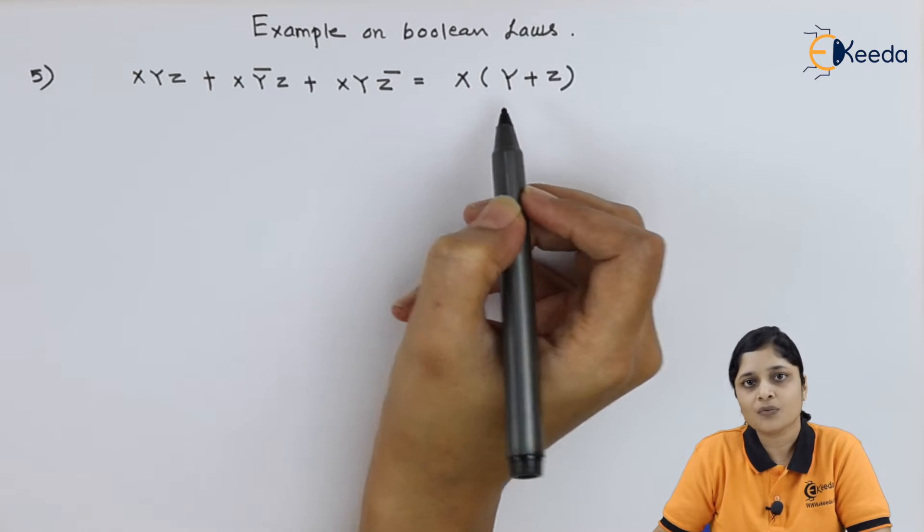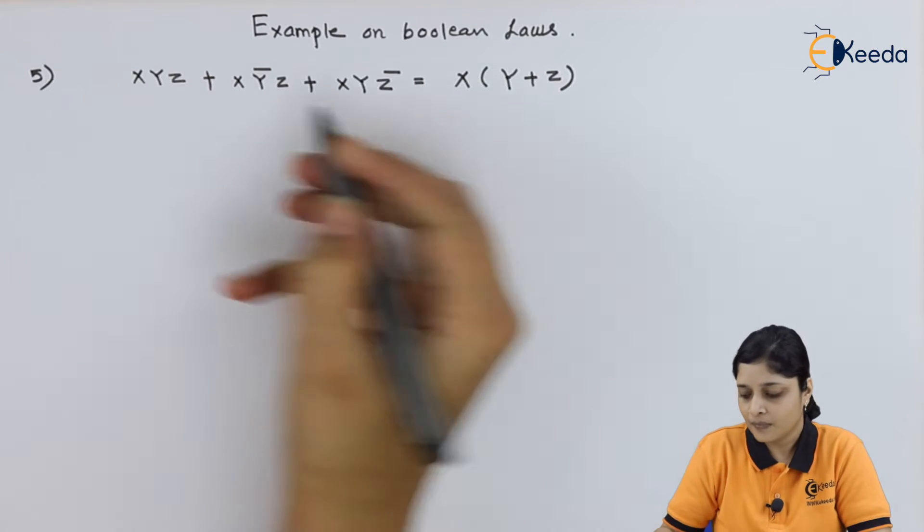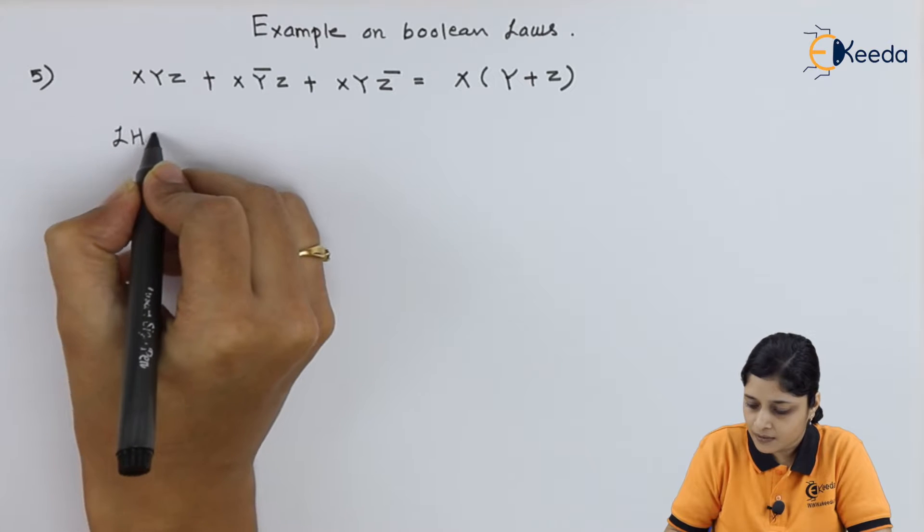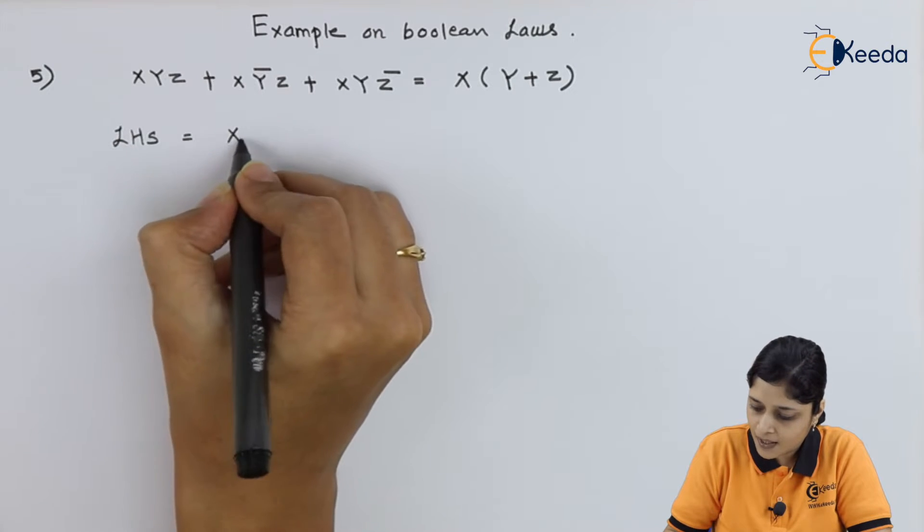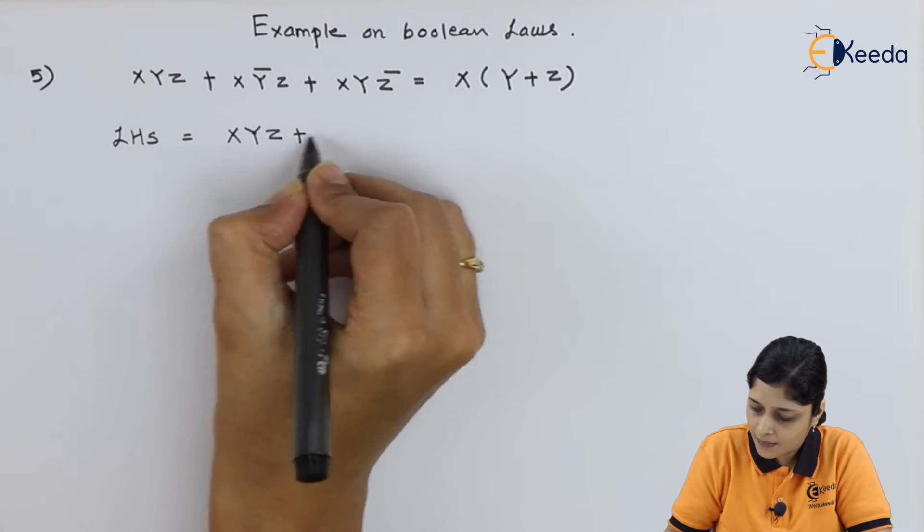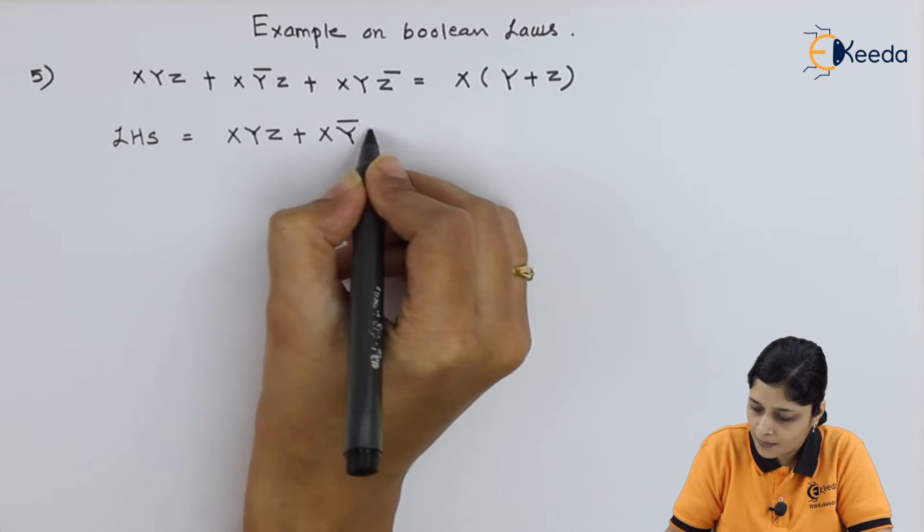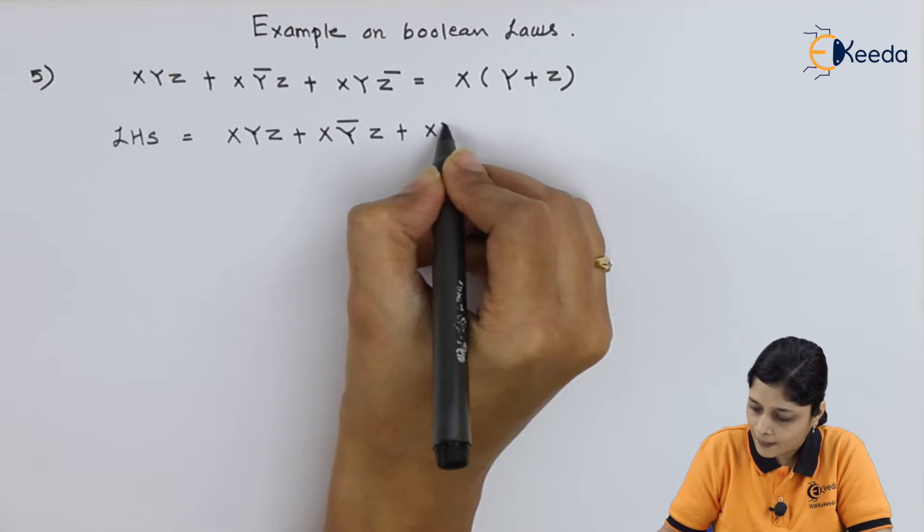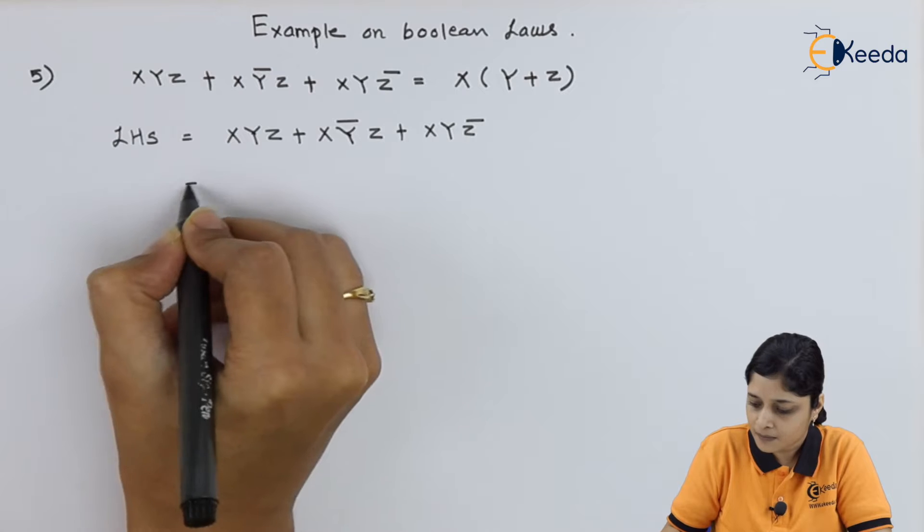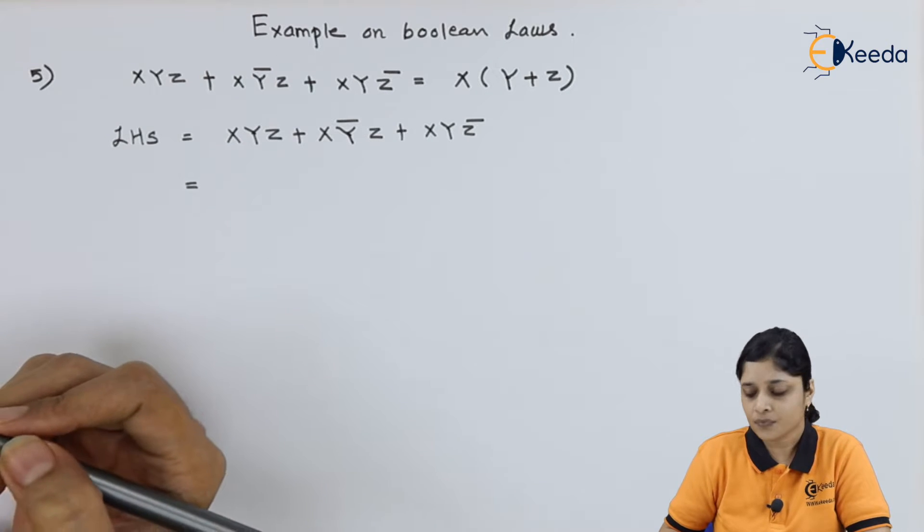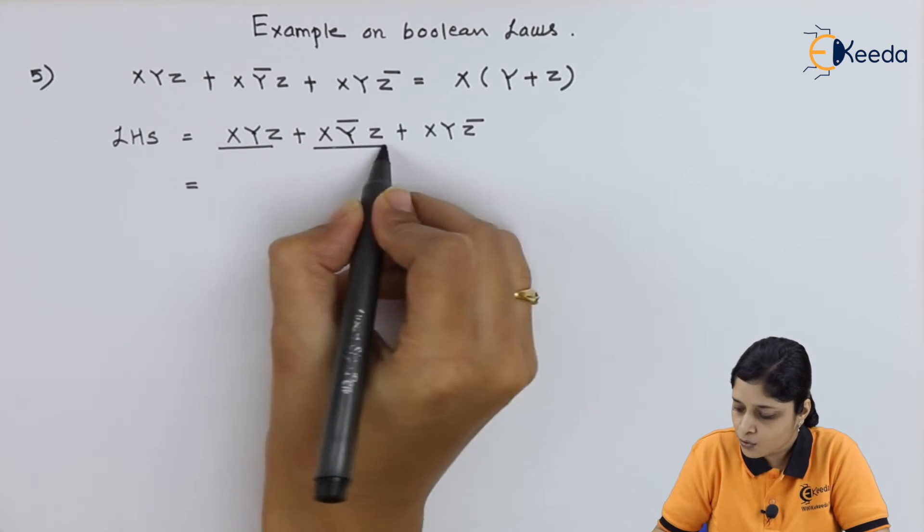So according to the Boolean Laws, we can solve this problem. Take LHS part. LHS part is xyz plus xy bar z plus xyz bar. Now, if you see these two terms,